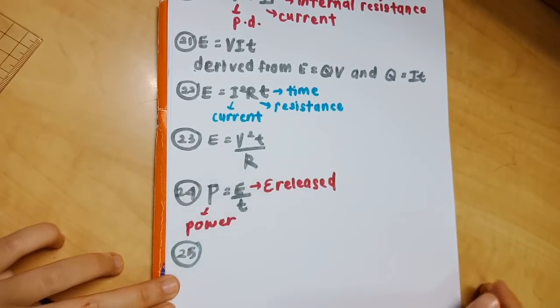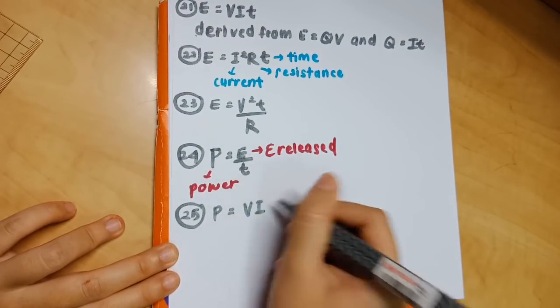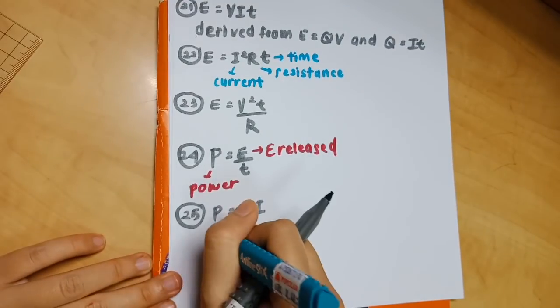Number 25: P equals VI. P is still power, V is potential difference, and I is current.